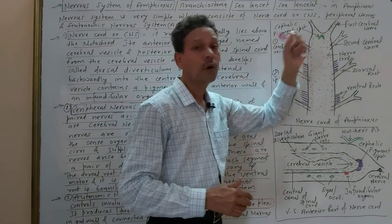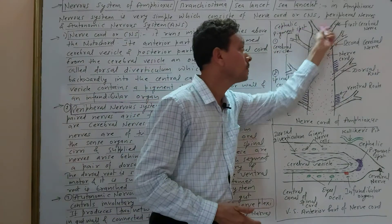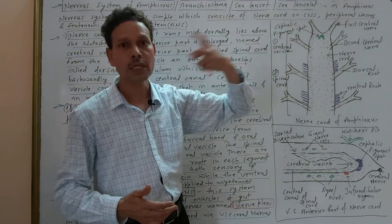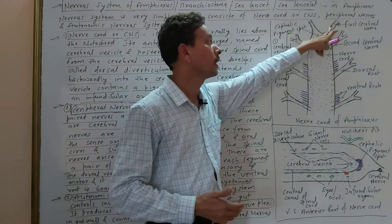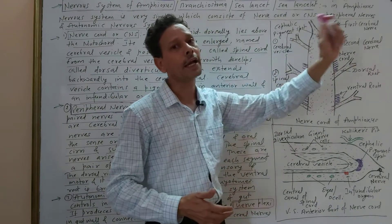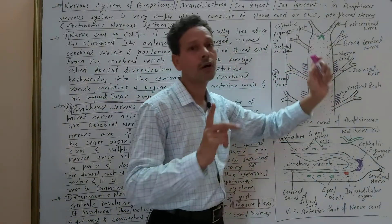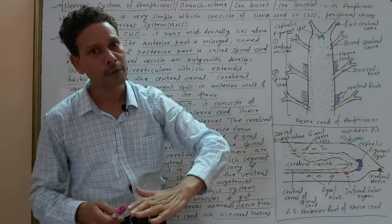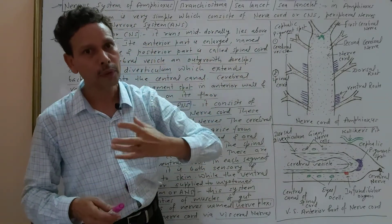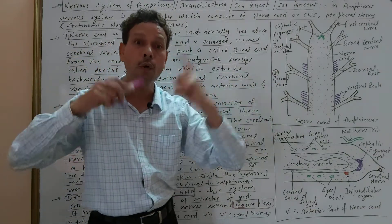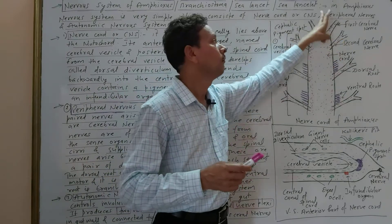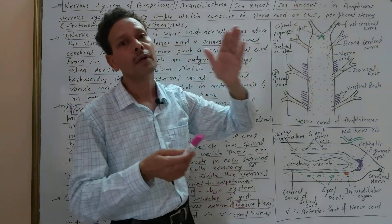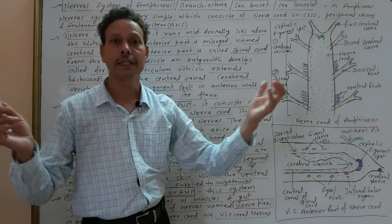The cerebral nerves are of two types — two pairs. The first pair of cerebral nerves supplies the anterior-most part called the rostrum, and these are sensory nerves. The second pair of cerebral nerves supplies the oral hood, the buccal hood, and the oral cirri (tentacles). These cerebral nerves are sensory in nature.